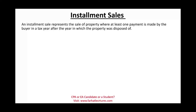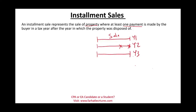So what is installment sales? Installment sales represent the sale of a property where at least one payment is made by the buyer in a tax year after the year in which the property was disposed of. Simply put, the sale happened in year one, but a payment for the sale will happen in year two, and another payment in year three — you might have a series of payments. When the sale takes place in one period and the payment takes place in another period, the buyer bought the asset and will be making payments. This is what installment is.